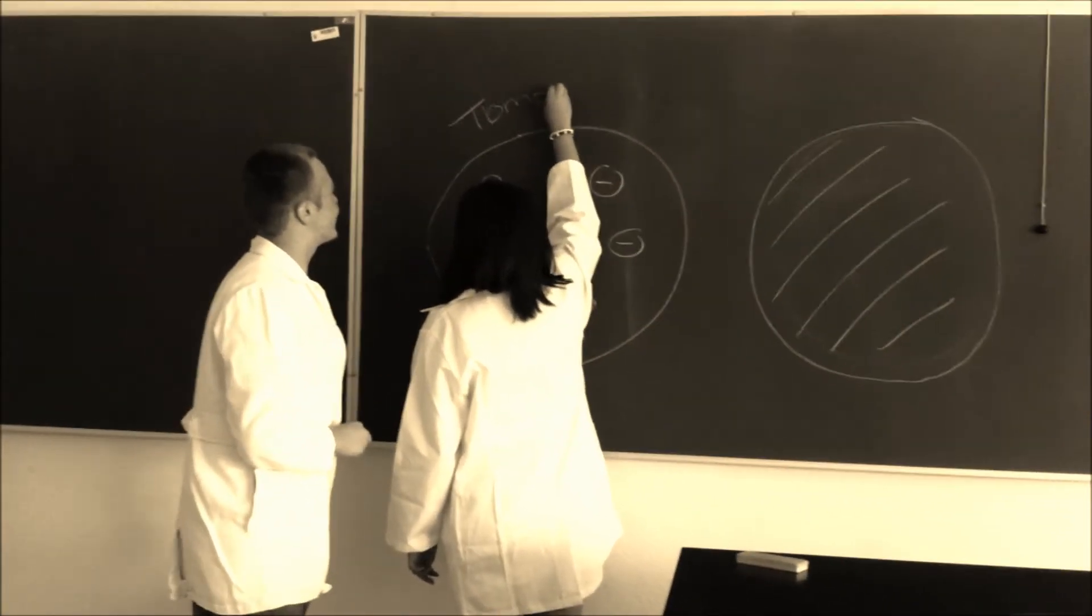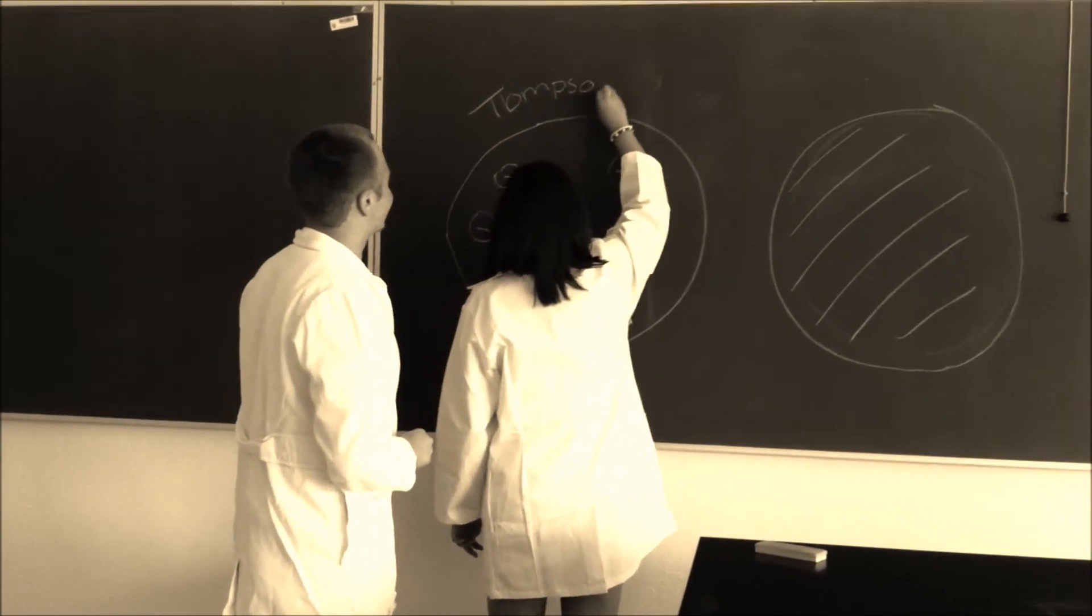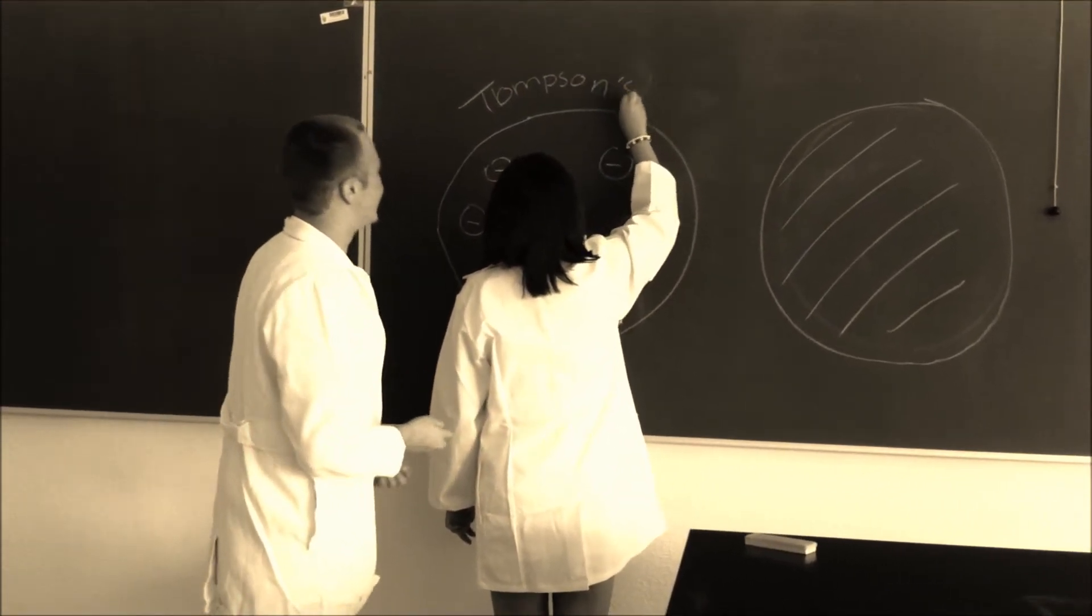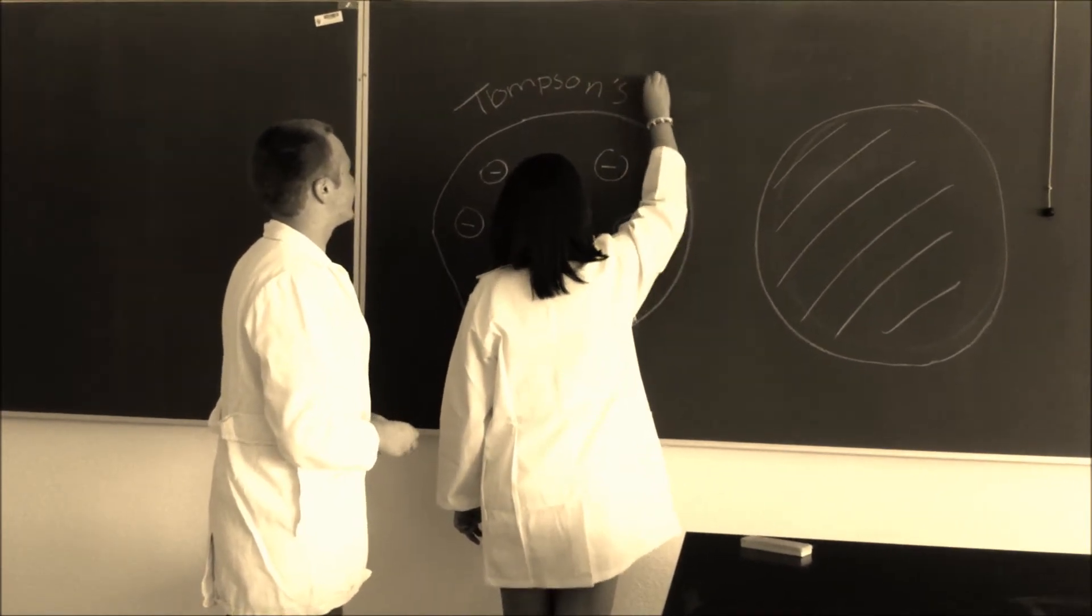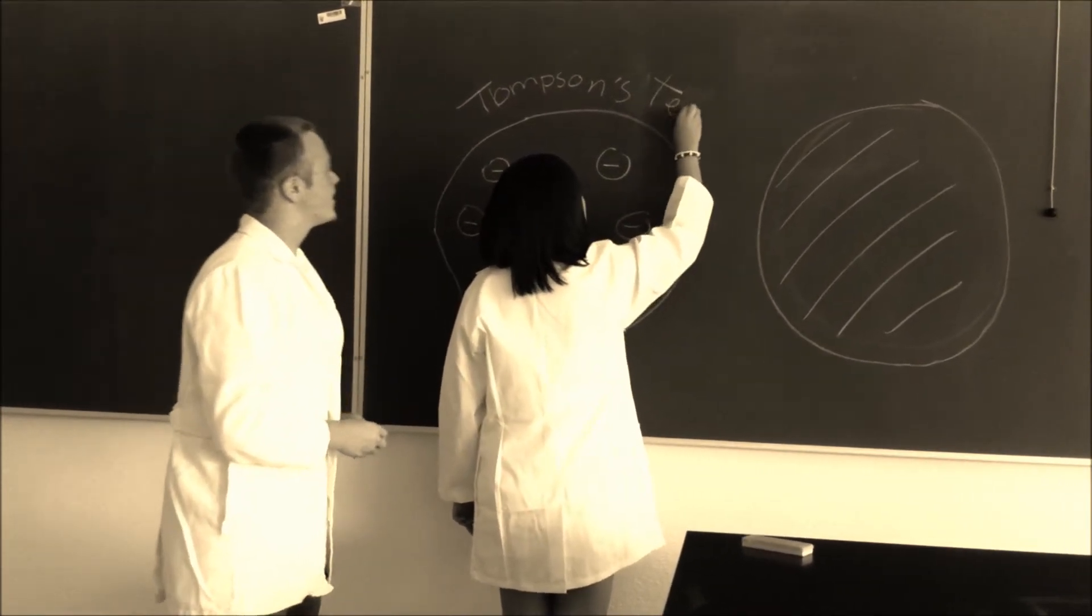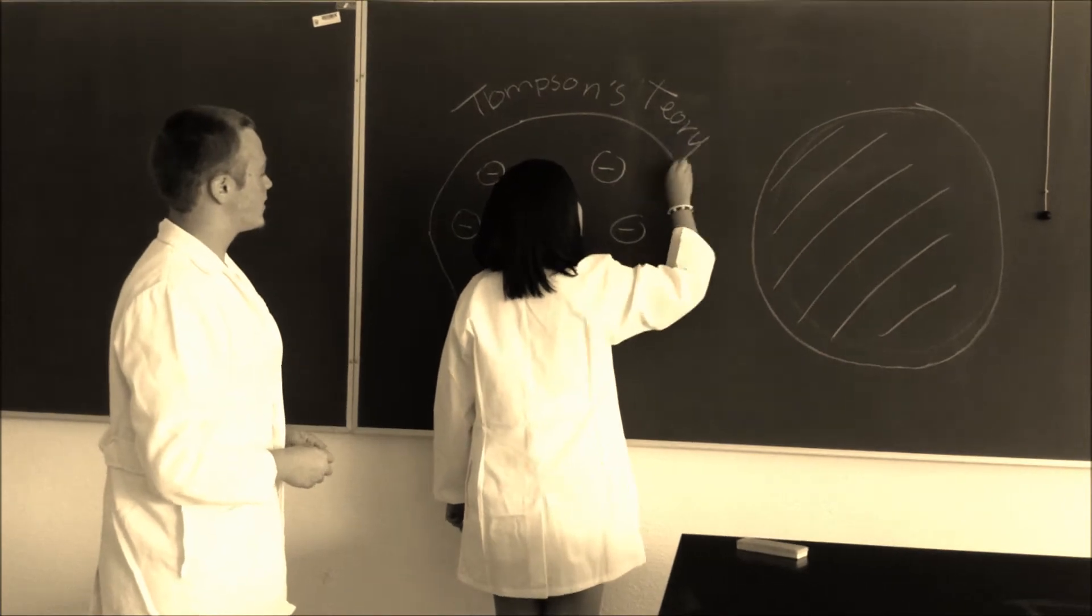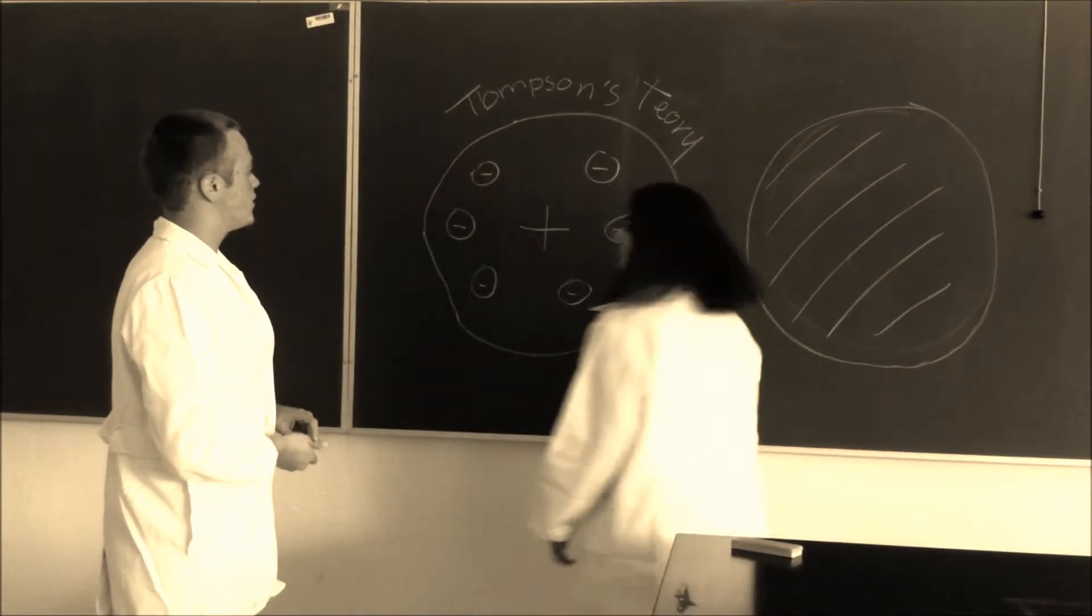In 1897, Thompson dramatically changed the modern view of the atom with his discovery of the electron. Some words suggest that the atom was not an indivisible particle, as John Dalton has suggested, but a jigsaw puzzle made of smaller pieces.